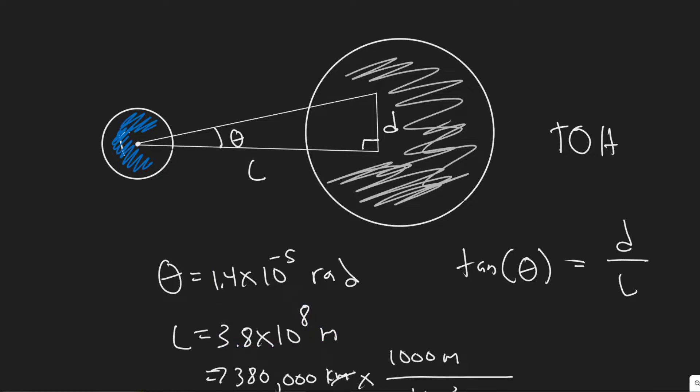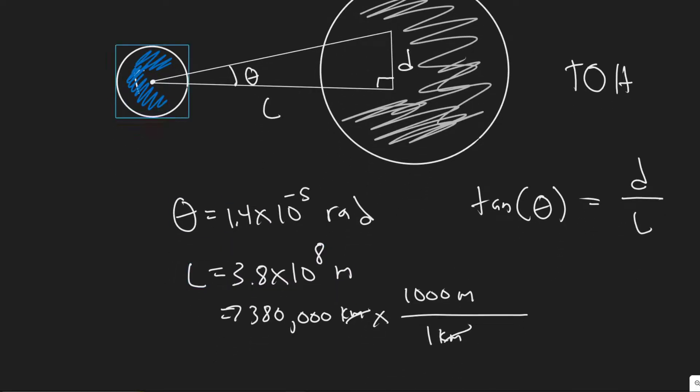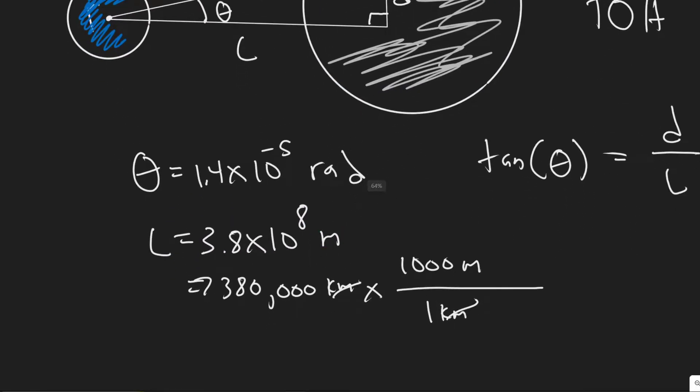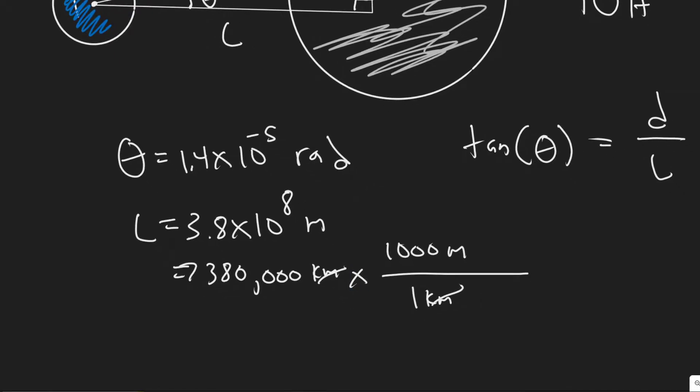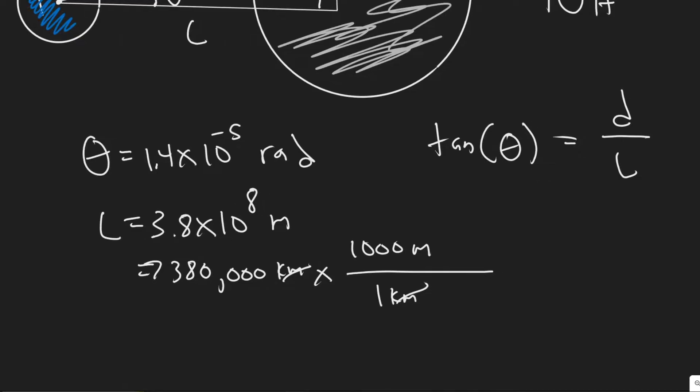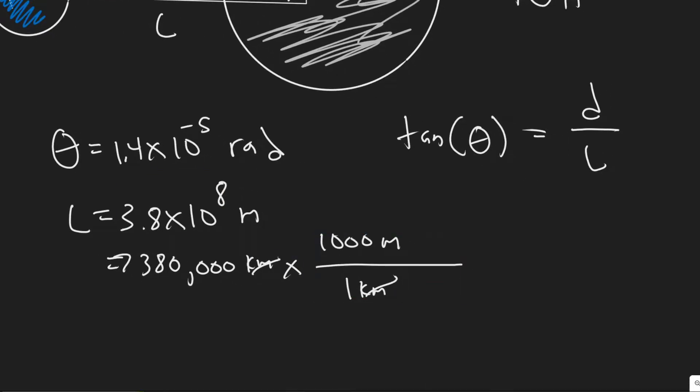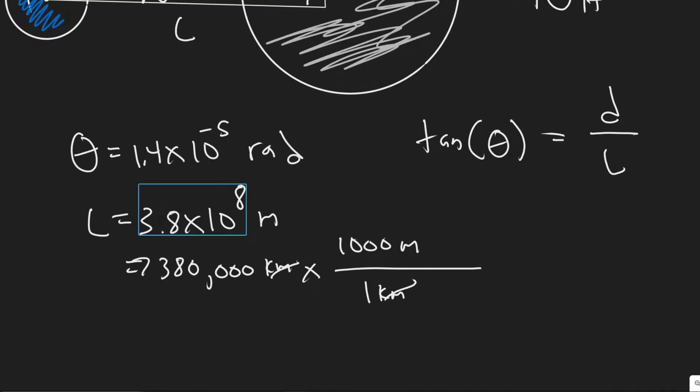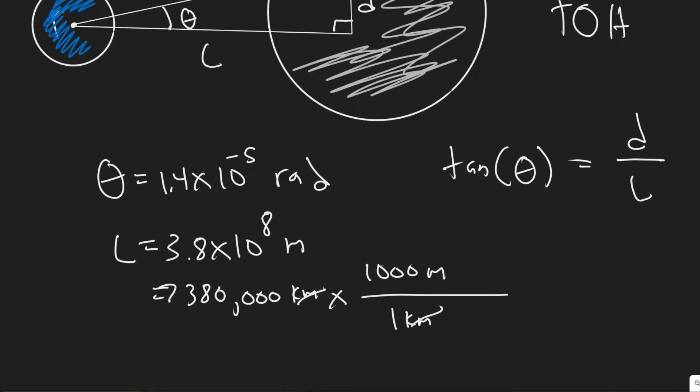So they give us that value. L, I'm calling it, so L is the distance from earth to the moon. We know it's 3.8 times 10 to the 8 meters, which they give us 380,000 kilometers and to convert it you would just multiply it by 1,000 because we know there's 1,000 meters for every kilometer. So the kilometers would just cancel there. And then 380,000 times 1,000 is 3.8 times 10 to the 8, and then now it's in meters.